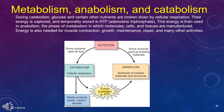During catabolism, glucose and certain other nutrients are broken down by cellular respiration. Their energy is captured and temporarily stored in ATP, adenosine triphosphate. This energy is then used in anabolism, the phase of metabolism in which molecules, cells, and tissues are manufactured. Energy is also needed for muscle contraction, growth, maintenance, repair, and many other activities.